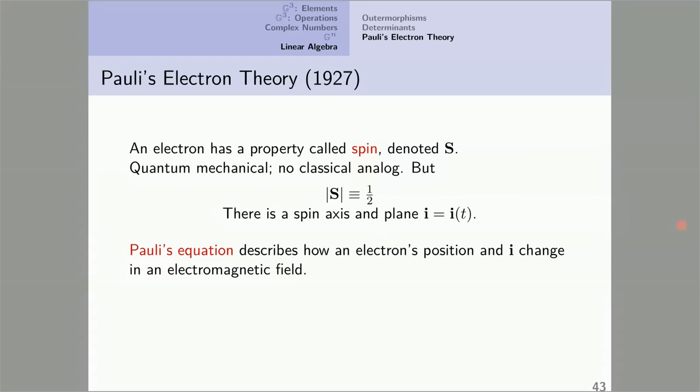Pauli's equation describes how an electron's position and spin plane change in an electromagnetic field. There are two versions of Pauli's equation that we're going to discuss. One is the vector algebra version, due to Pauli. It uses an algebra called the Pauli algebra, and it's specialized mathematics, as we'll see. We'll also discuss a geometric algebra version, which uses geometric algebra. Unsurprisingly, a general purpose mathematical language.